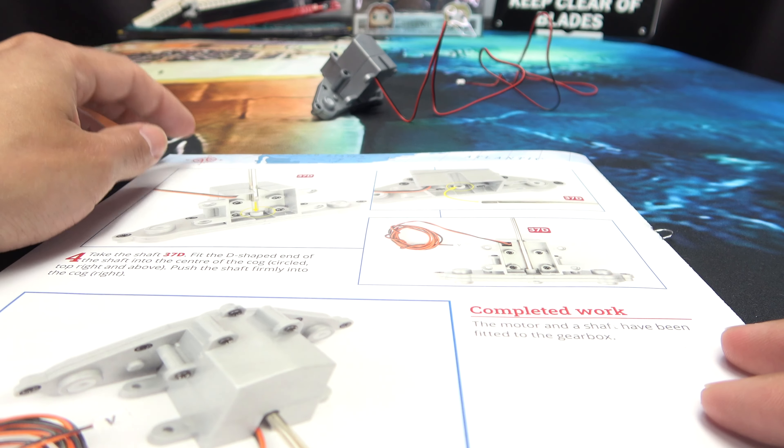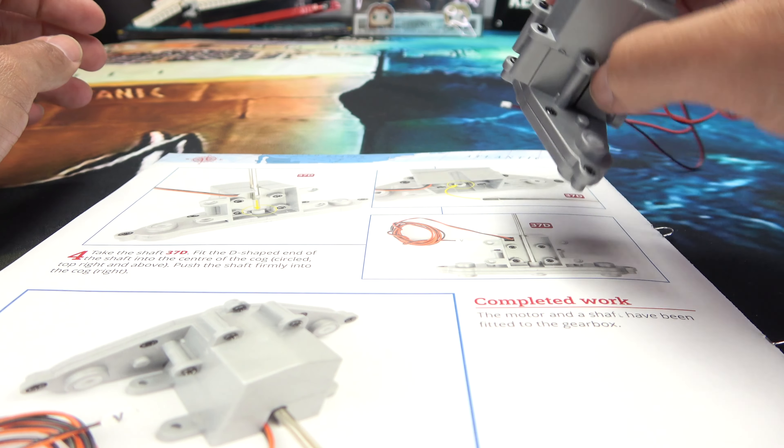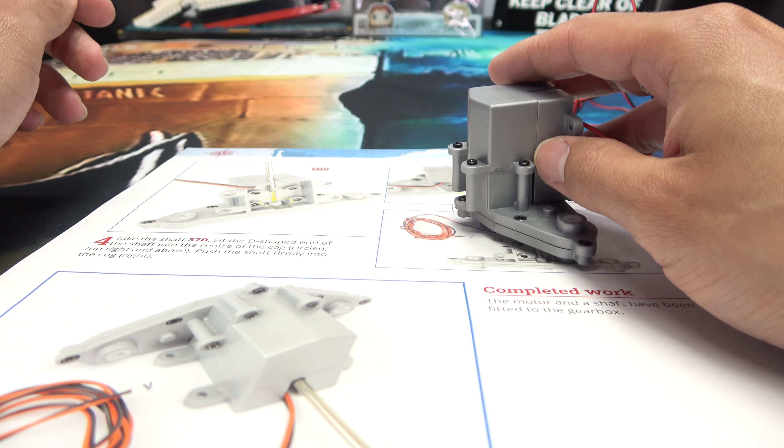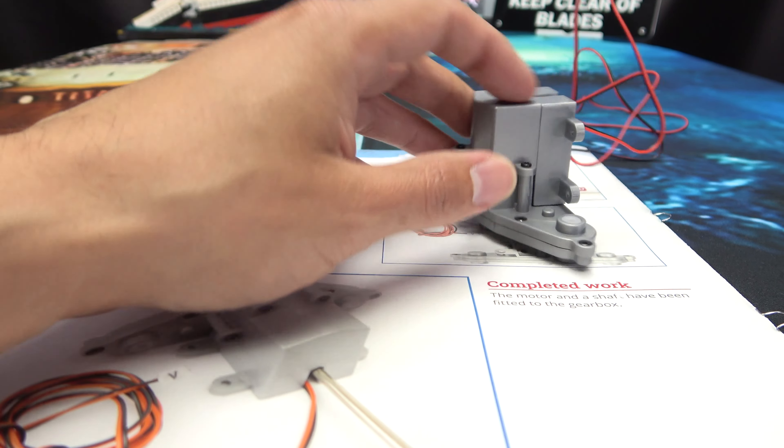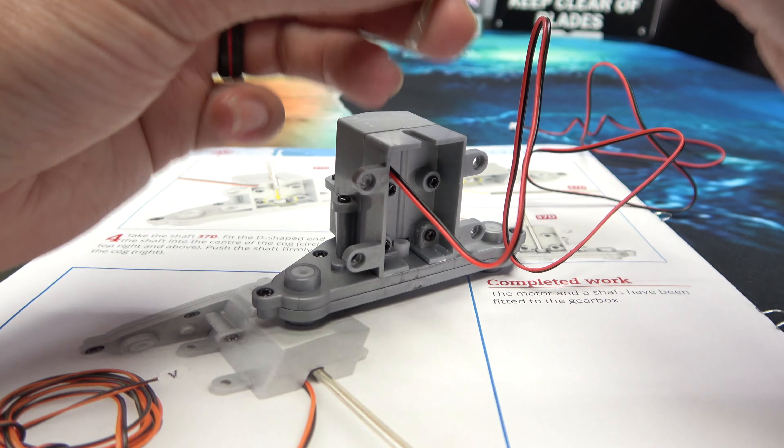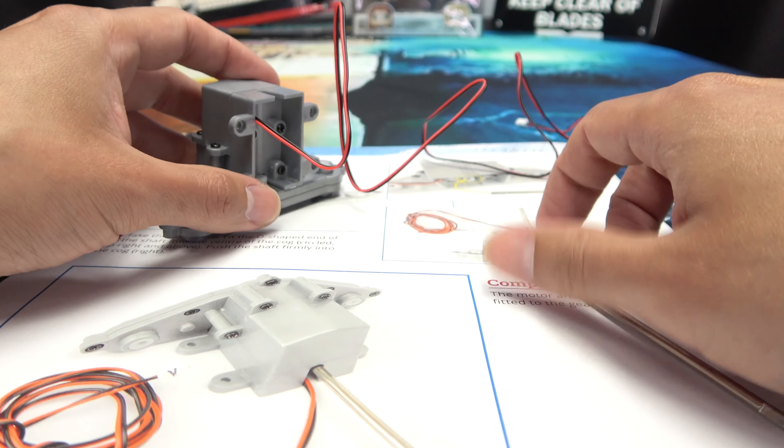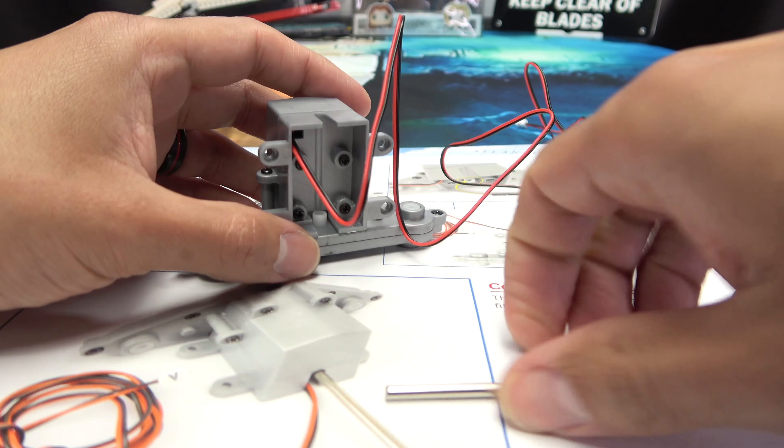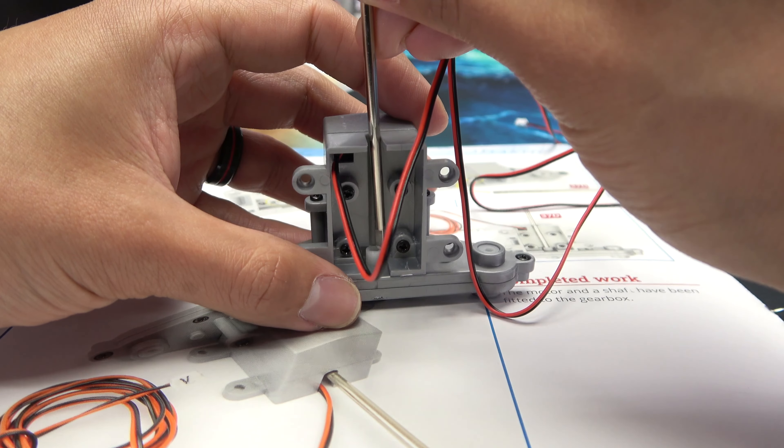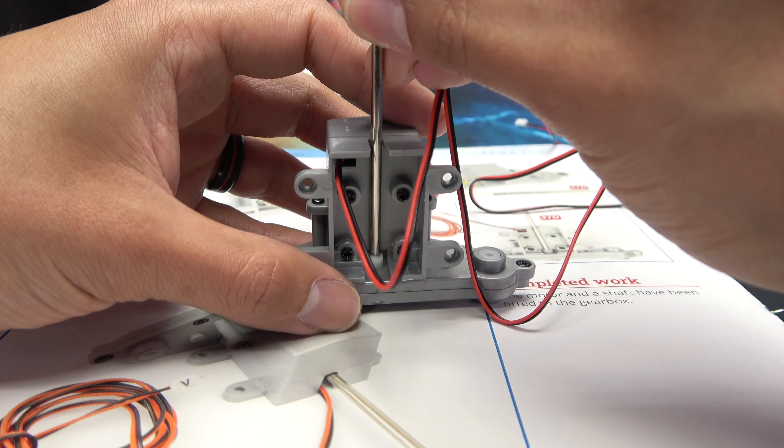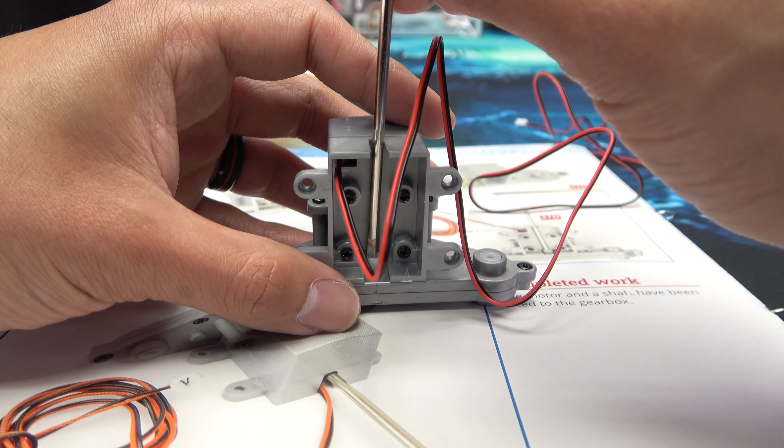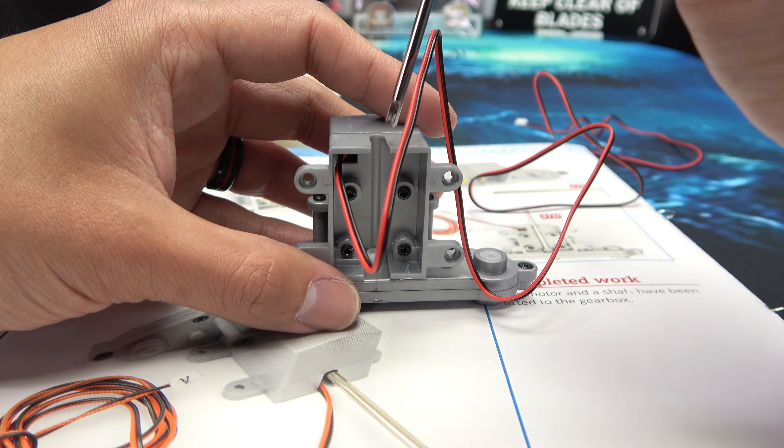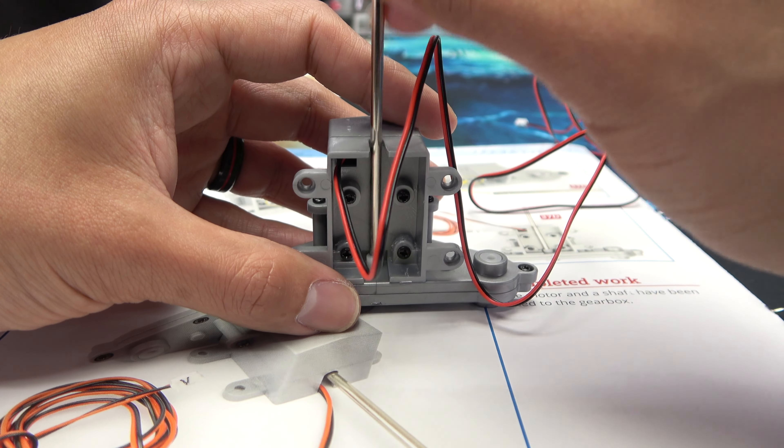So now, what are we doing? We are now taking the shaft, fit the D-shaped end of the shaft into the center of the cog. Push shaft firmly into the cog. I will push this shaft firmly. I will push it so firmly. Look, sometimes it happens. It just happens. Push that. Well, it doesn't matter. It doesn't actually stay in place. It doesn't matter how firmly you push it. It pops out pretty easily. So pushing it firmly doesn't really matter.